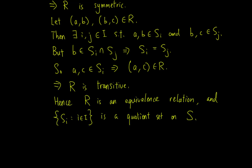Hence R is an equivalence relation, and the set {S_i} is the quotient set S/R, which completes the proof.